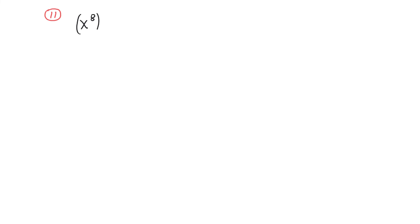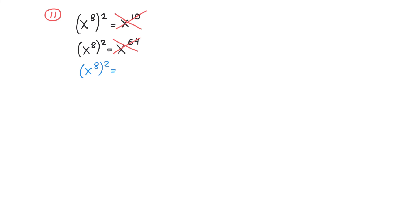On number 11, we raise x to the eighth power to the second power. Adding the exponents to get x to the tenth power would be incorrect, and raising 8 to the second power to get x to the 64th would also be incorrect. Instead, when raising a power to a power, we multiply the exponents, giving x to the sixteenth power. This is because squaring means multiplying twice: x to the eighth times x to the eighth, and by the product rule we add those exponents to get 16.